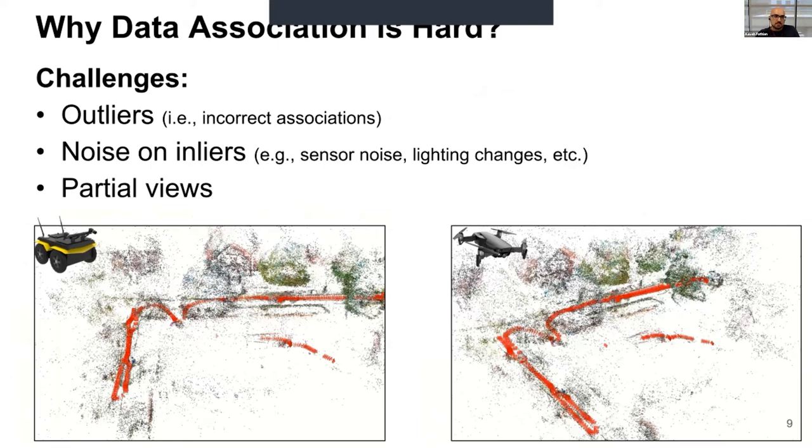This is an extremely challenging problem. It just happens because, in practice, you have lots of outliers, lots of points that should not be matched with each other. Even on the points that should be matched with each other, there's noise, they're not going to perfectly align. And you have this partial view cases, maybe your robot only see part of the environments, the other robot also see another part, and there's very few overlap between them. These really make this problem of finding these identical elements extremely challenging.